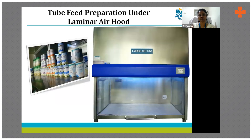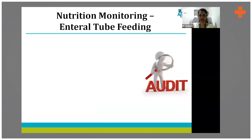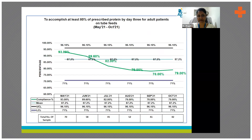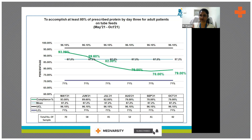Feeds are prepared under a laminar airflow unit to ensure patient safety. Without proper monitoring and auditing, nothing remains a continuous process — it can be initiated but interrupted or stopped at any time. We conduct a continuous audit every month, collecting data on patients on tube feed. Our target is 80% of prescribed calories and protein achieved by day three, and 90% by day five. This is part of the quality monitoring system reviewed day in and day out.